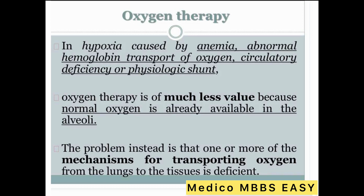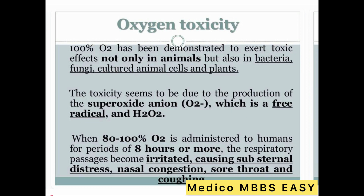In hypoxia caused by anemia, abnormal hemoglobin transport of oxygen, circulatory deficiency, or physiological shunt, oxygen therapy is of much less value because normal oxygen is already available in the alveoli. The problem instead is that one or more of the mechanisms of transporting oxygen from the lungs to the tissues is deficient.